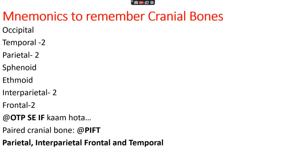First, there is a mnemonic to remember cranial bones. Cranial and facial bones all come under the bones of the skull. The cranial bones of bovine are: occipital, temporal, parietal, sphenoid, ethmoid, interparietal, and frontal bone. To remember these, we use the mnemonic 'OTP se is kam hota', where O stands for occipital, T for temporal, P for parietal, S for sphenoid, E for ethmoid, I for interparietal, and F for frontal.